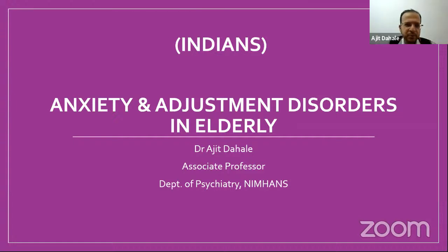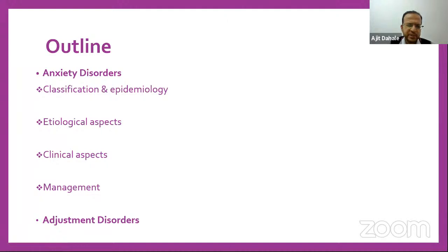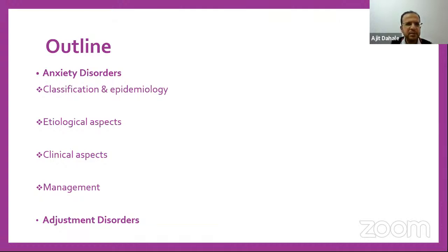Thank you, Dr. Chetan. The outline of today's presentation: we will first discuss anxiety disorders — classification, etiological aspects, clinical aspects, and management — and then adjustment disorders. This discussion focuses on features specific to elderly. The literature on adjustment disorders is scarce, so whatever information is available will be presented, mainly from the Oxford Textbook of Old Age Psychiatry and PCNA on Geriatric Psychiatry, with references given at the end.